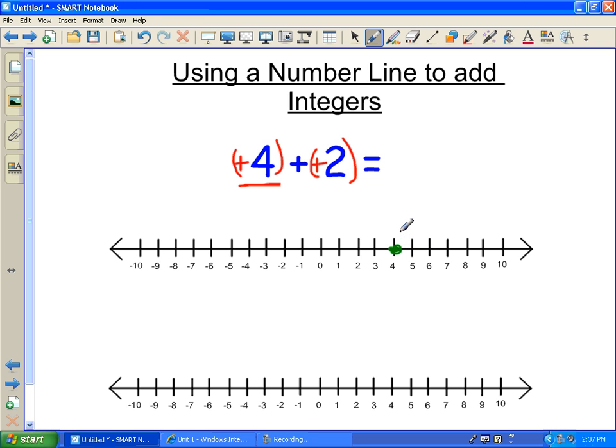Now there's two ways to do it. I'll show you the first way, and then I'll show you the other way. The first way, and the way that I suspect most people will do it, is once they start on plus 4, you will have to add 2 more, or 2 more positive.